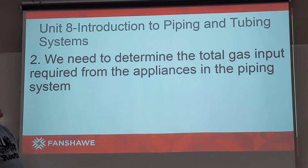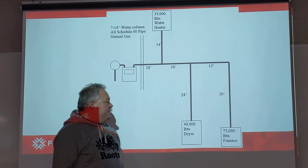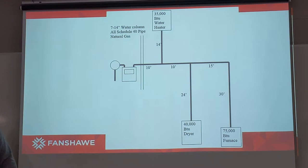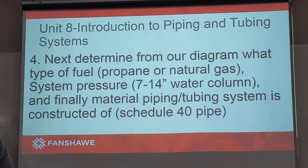Step number two, we need to determine the total gas input required from the appliances in the piping system. Going back to our diagram, we add up all the BTU requirements: a 35,000 BTU water heater, a 40,000 BTU dryer, and a 75,000 BTU furnace, for a total of 150,000 BTUs. To summarize, step number three: our LMR is 65 feet and our total gas load is 150,000 BTUs. Because we're in between table values, we're going to go to 70 feet, which we'll talk about in a second.